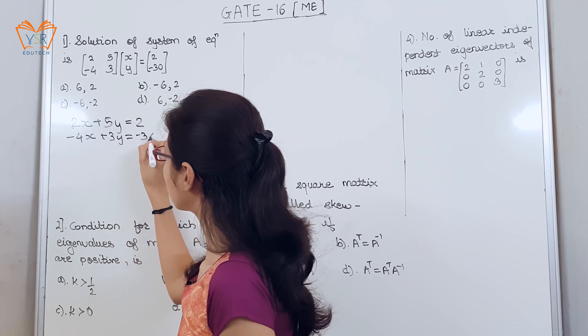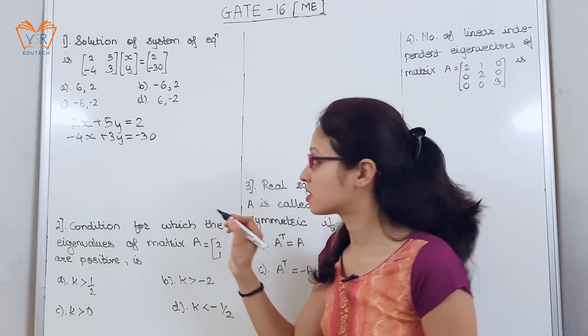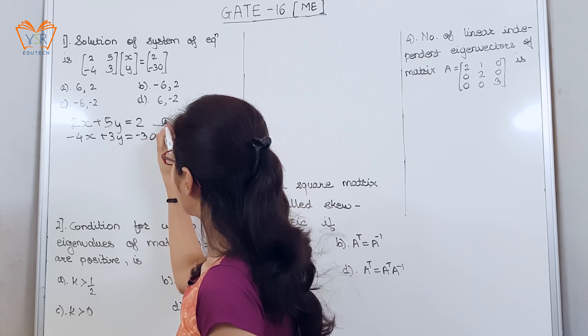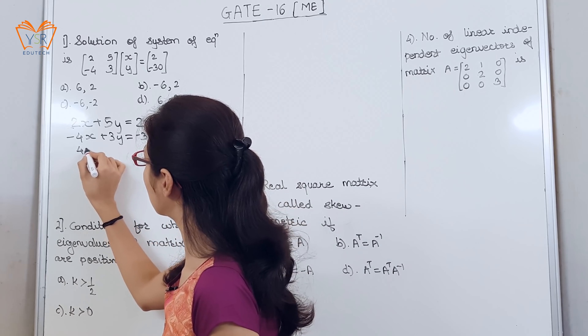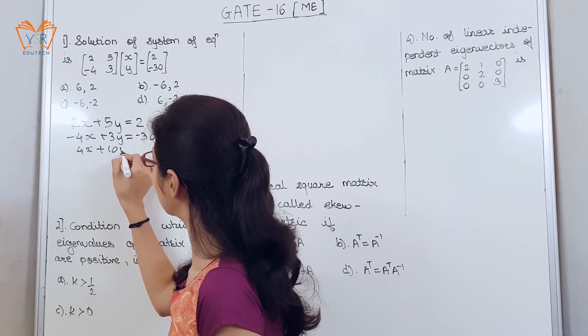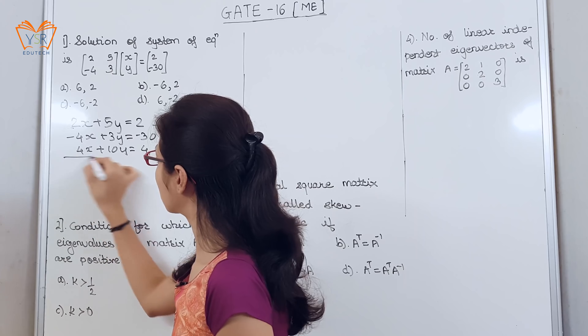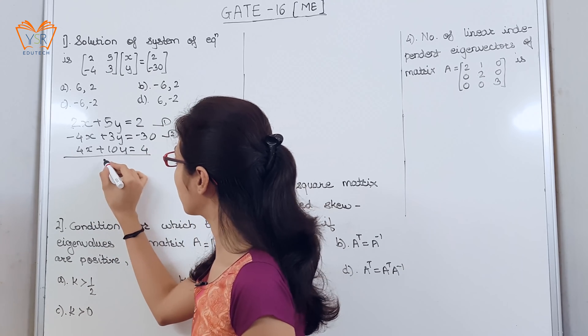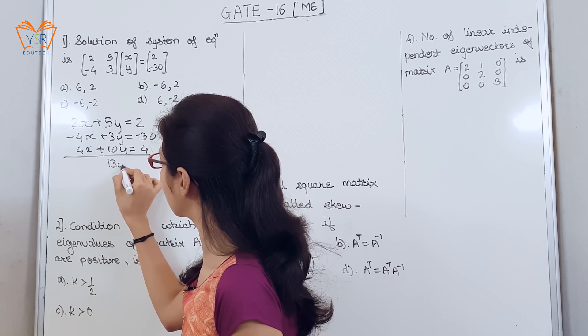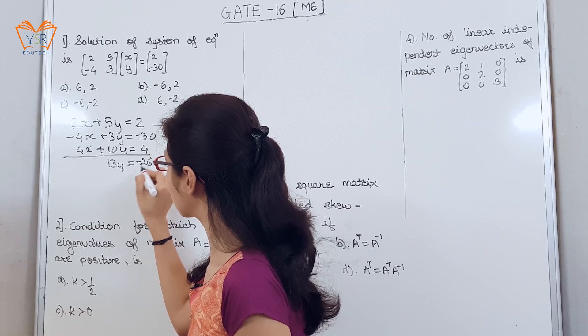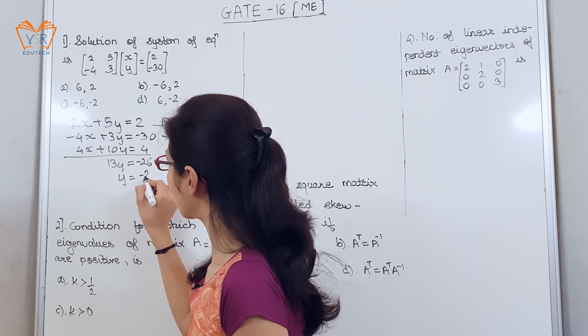Now, these are two simultaneous equations. We will multiply first equation by 2. So, adding both the equations we get the value of y is minus 2.